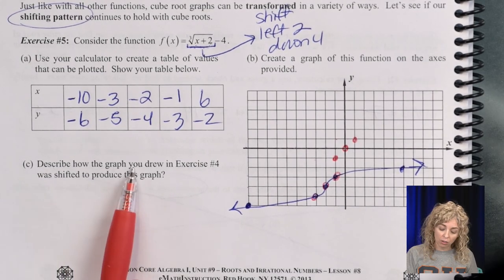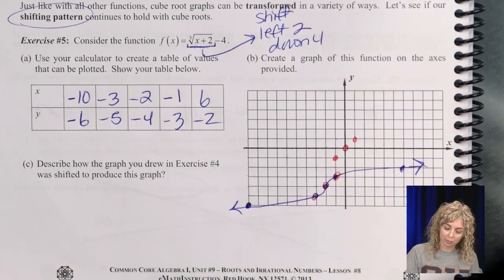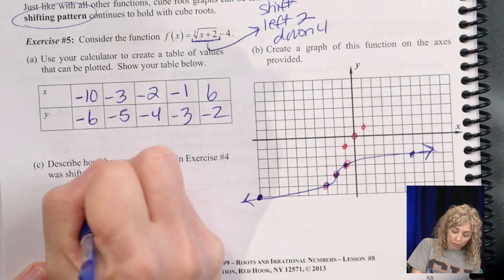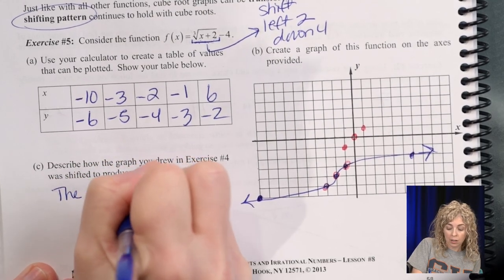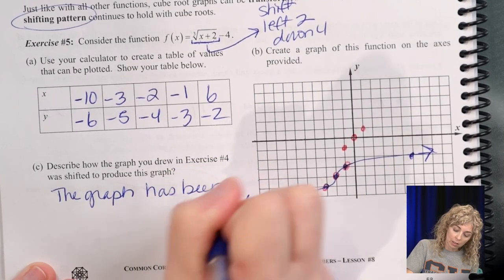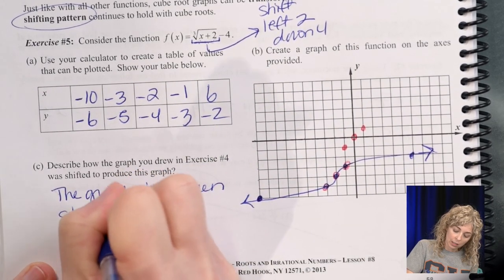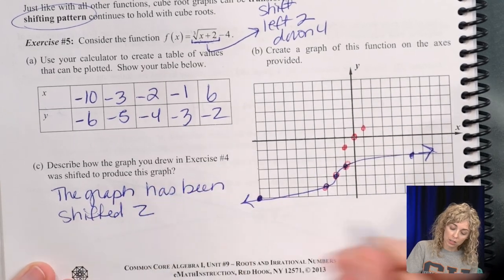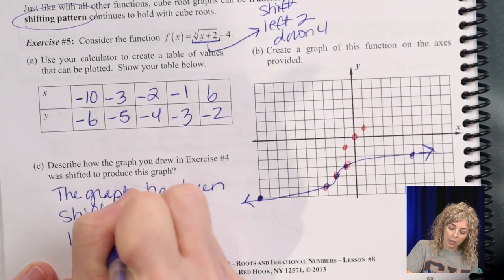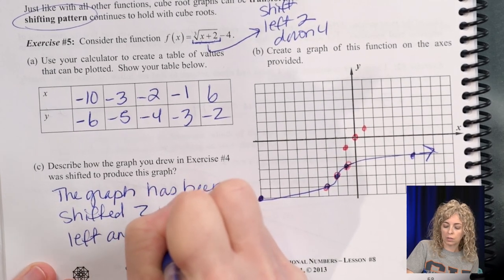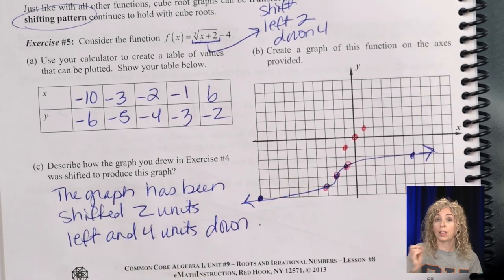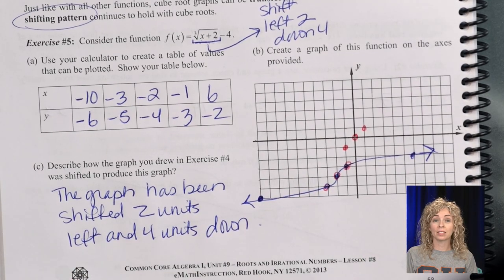So describe how the graph you drew was shifted. The graph has been shifted two units left and four units down. And that finishes the unit. Thank you.